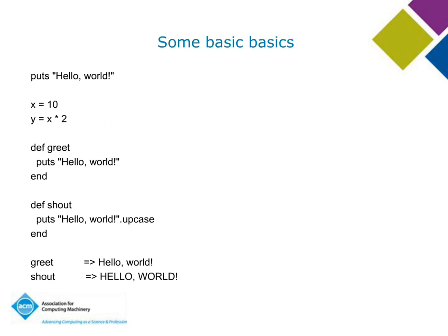We're going to start with some basic basics, just to give you an initial flavor of the language. The first line, `puts 'hello world'` — the puts method prints a string and adds a new line. There is also a print method which doesn't add a new line. Variable assignment: `x = 10`, `y = x * 2` — some basic arithmetic. Nothing too surprising; untyped variables that you can assign to without declaring them.